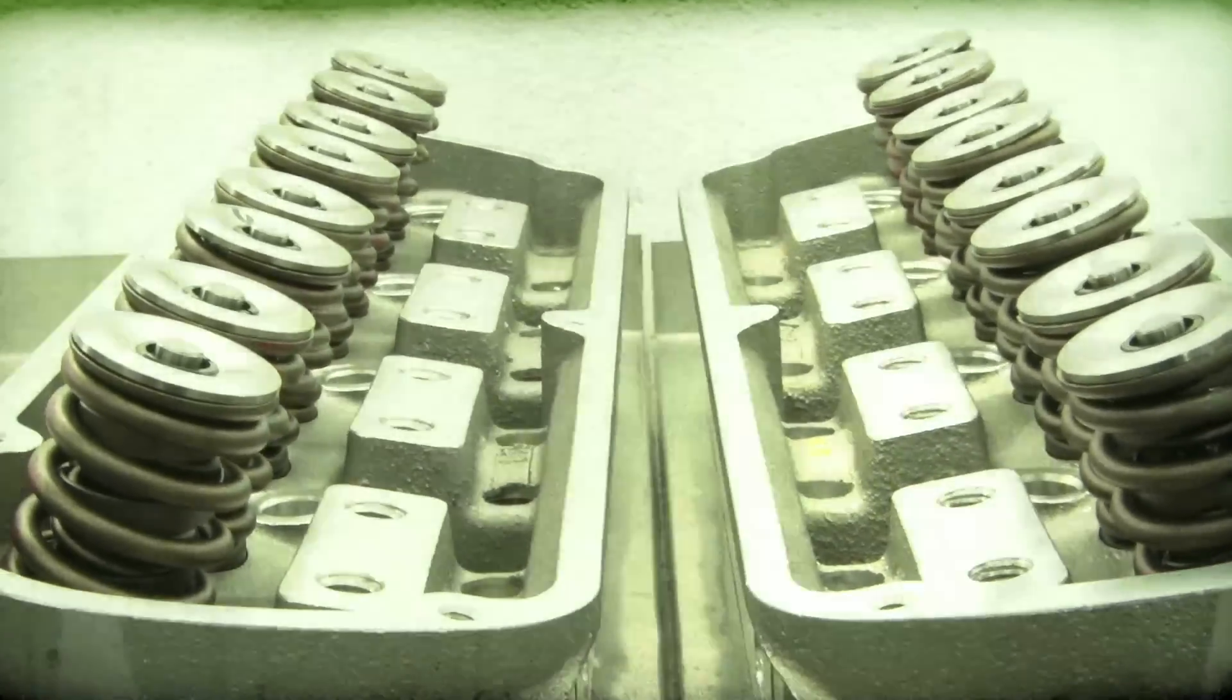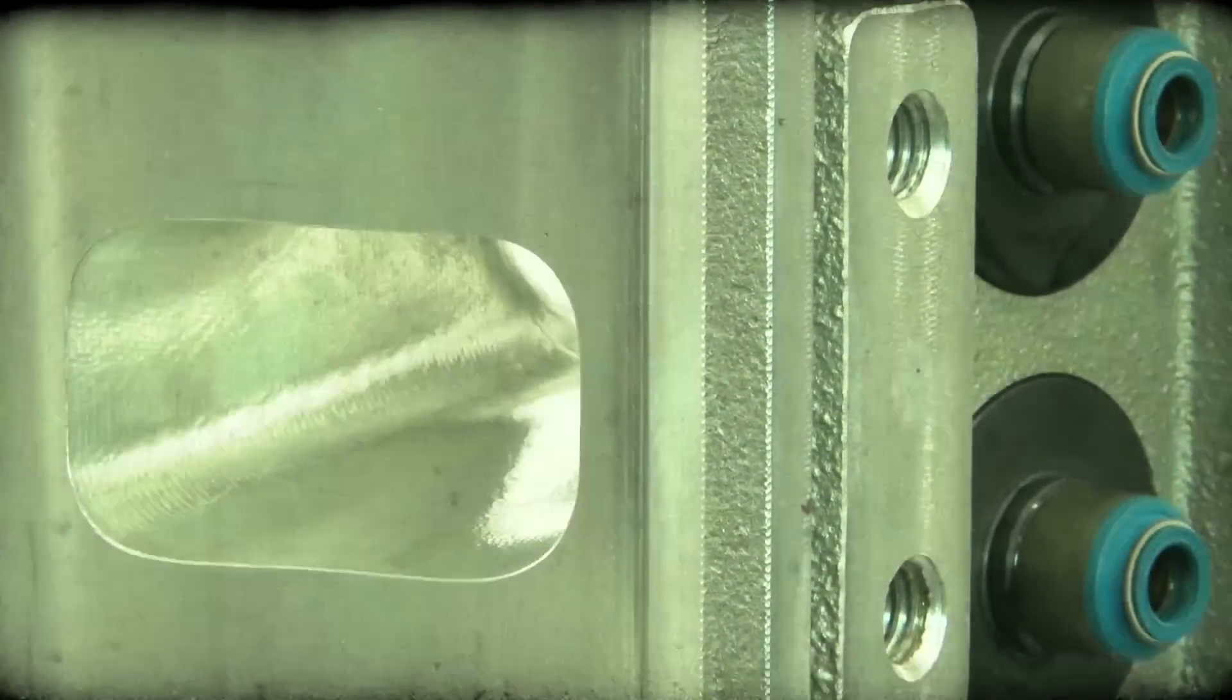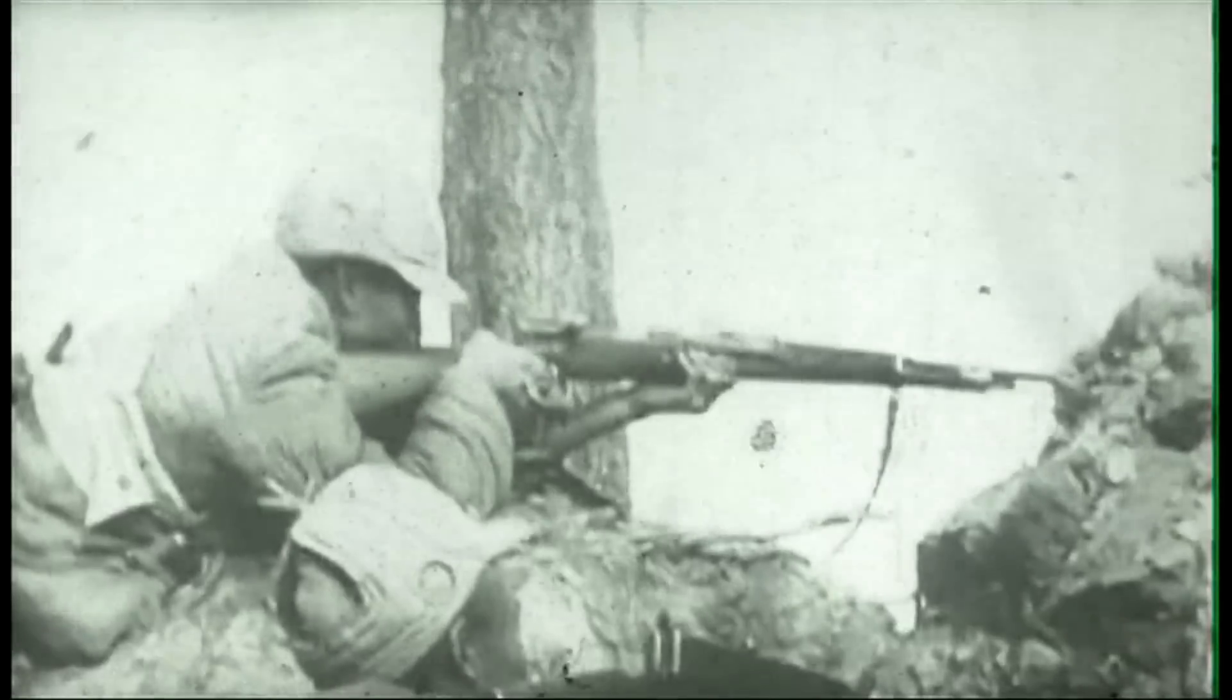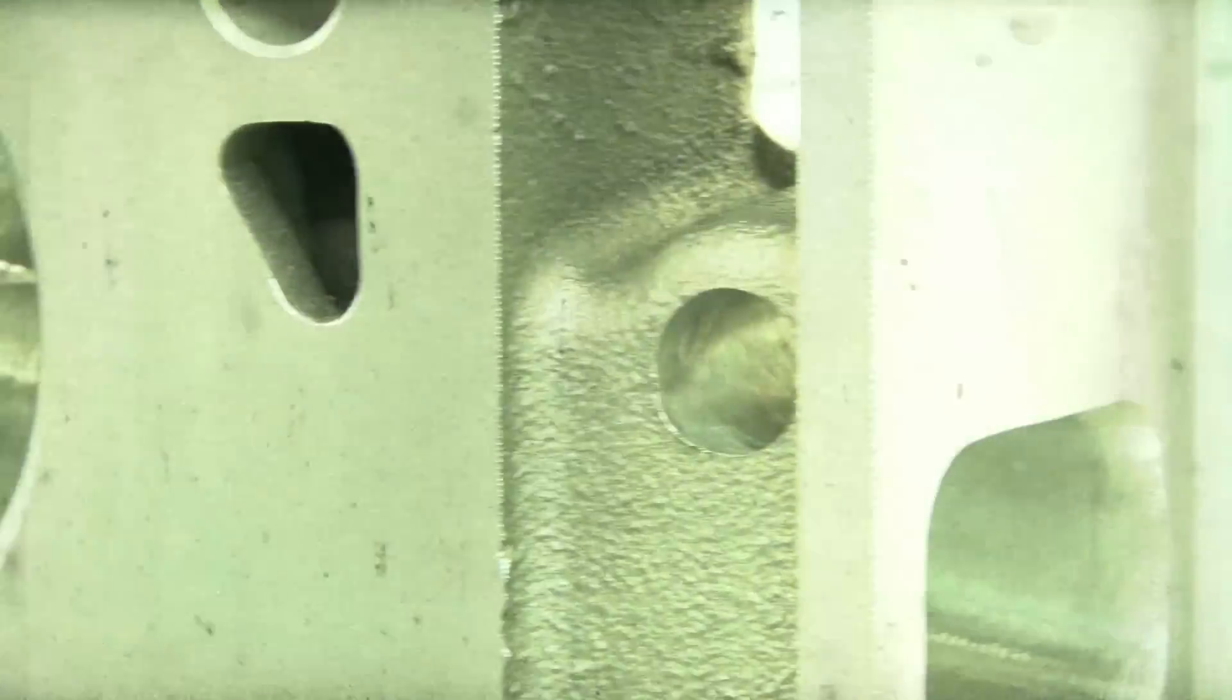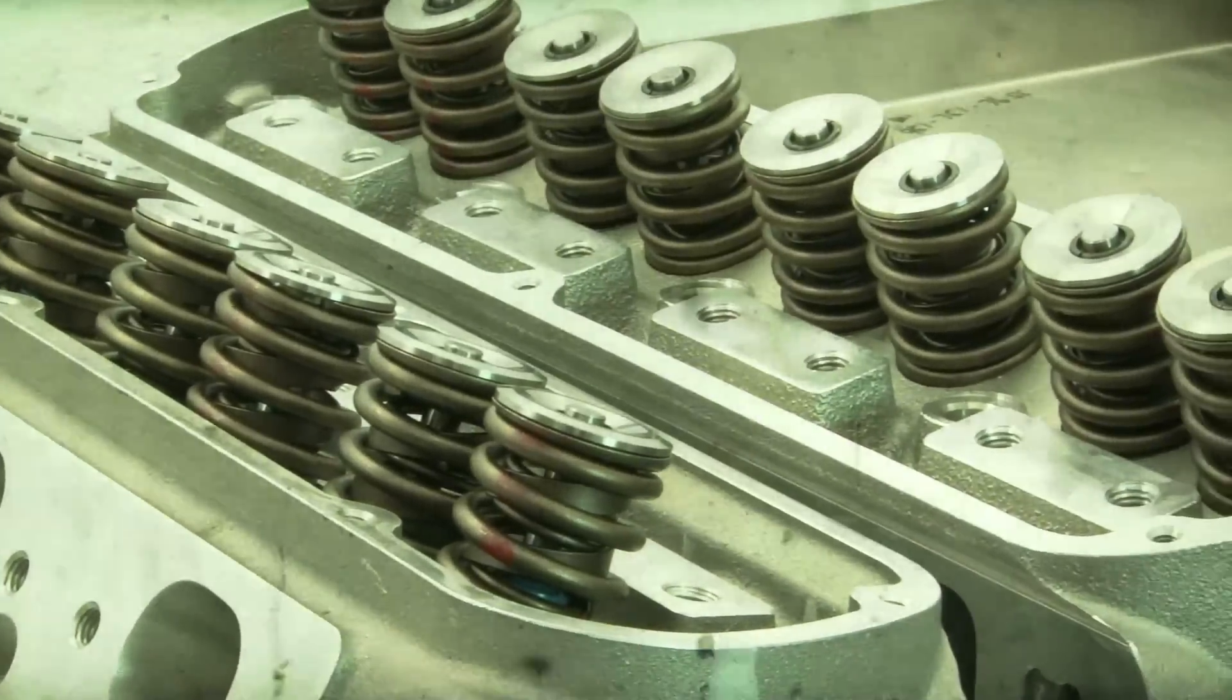The cylinder heads and the valve train are integral parts that keep the entire process of combustion under control. Think of a gun to control ammo. The ammo itself is worthless without an organized and controlled method of delivery.